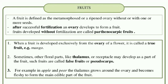First, when a fruit is developed exclusively from the ovary of a flower, it is called a true fruit. Sometimes, other floral parts like the thalamus or receptacle may develop as part of the fruit. Such fruits are called false fruits or pseudocarps.